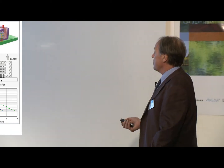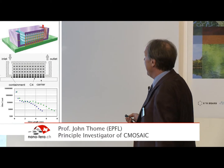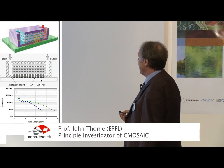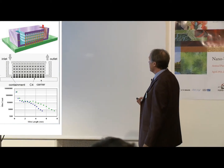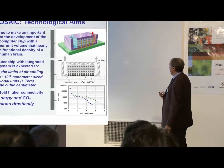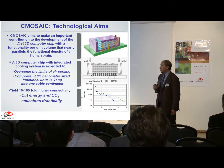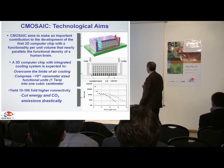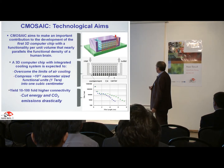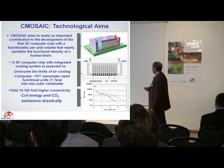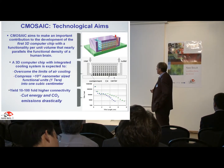The basic idea is to go to a three-dimensional geometry. A simple diagram shown here illustrates having the computer circuit on each level. You can see the cooling channels in between the layers. Between these cooling channels we also have through-silicon vias, which carry signals from one level of the microprocessor to the next. Fluid comes in on one side and out the other for integral cooling.